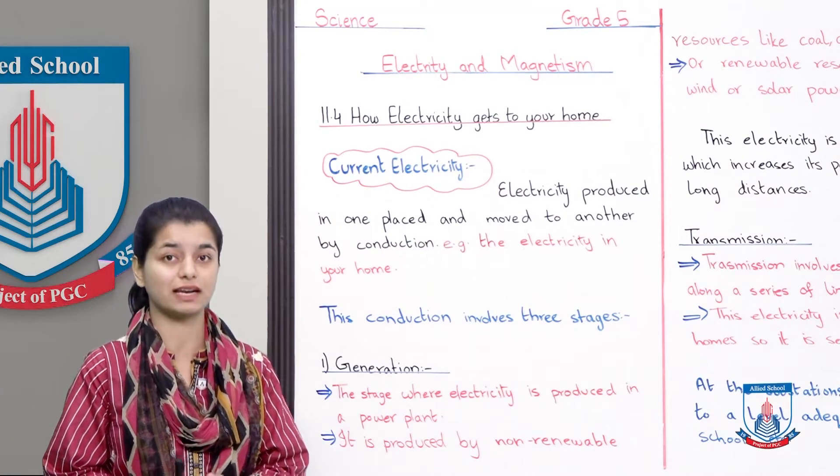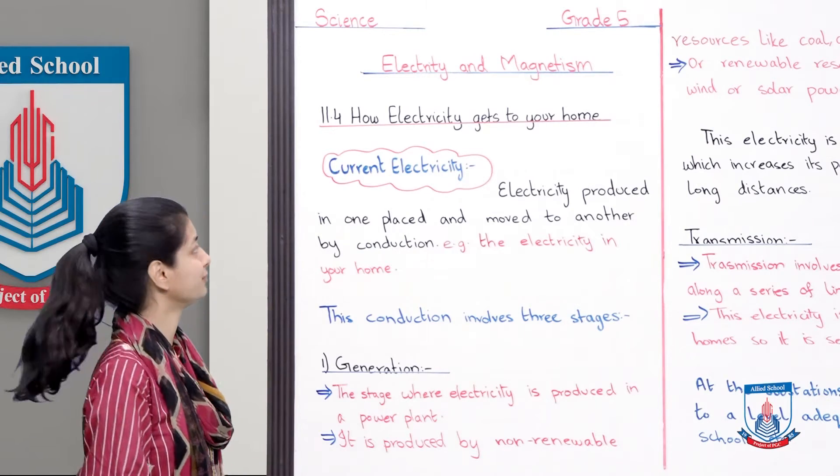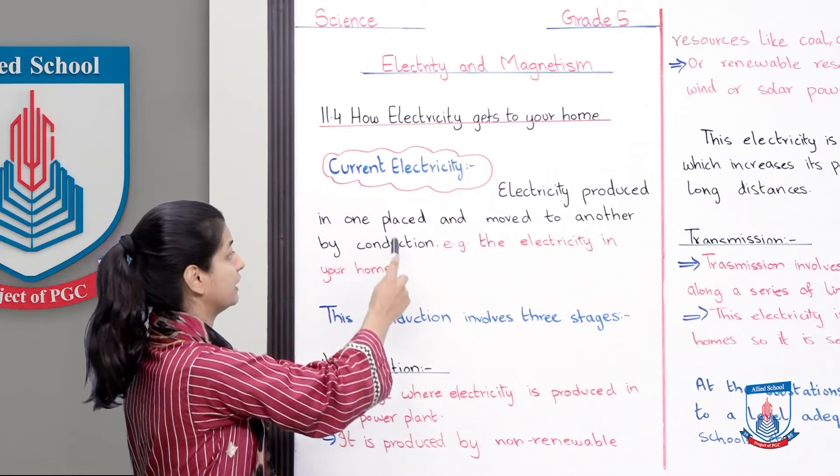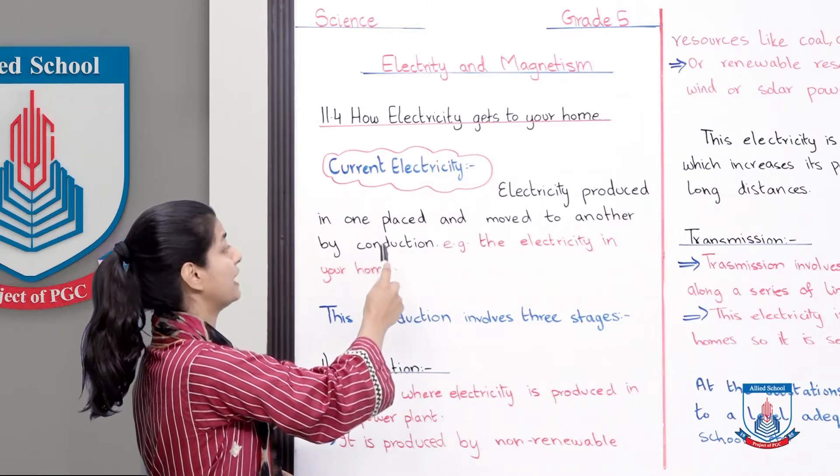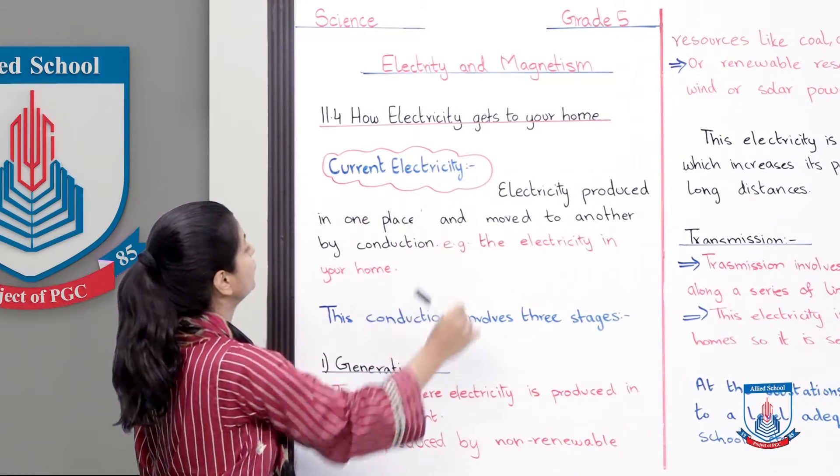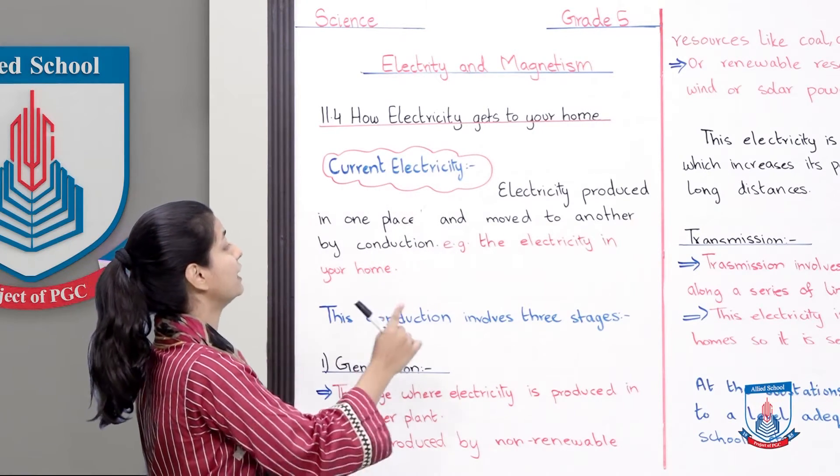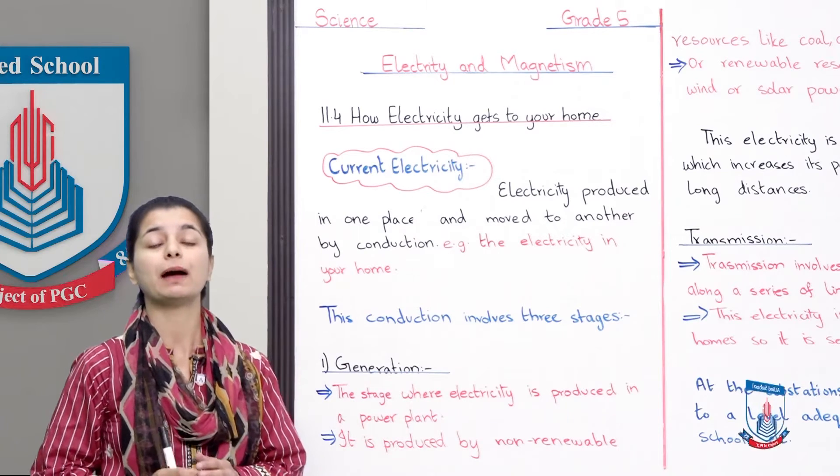First, current electricity - electricity produced in one place and moved to another by conduction, for example the electricity in your home.